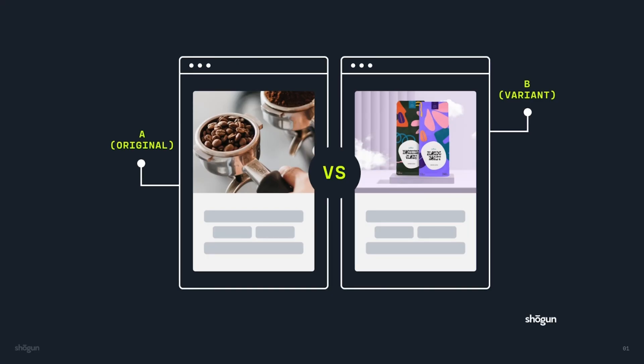So what is A/B testing? A/B testing, also called split testing, is a way to compare two different versions of a webpage, product page, or even an ad to see which one performs better. You show version A to one group of visitors and version B to another, then track which one gets more conversions, clicks, or sales.